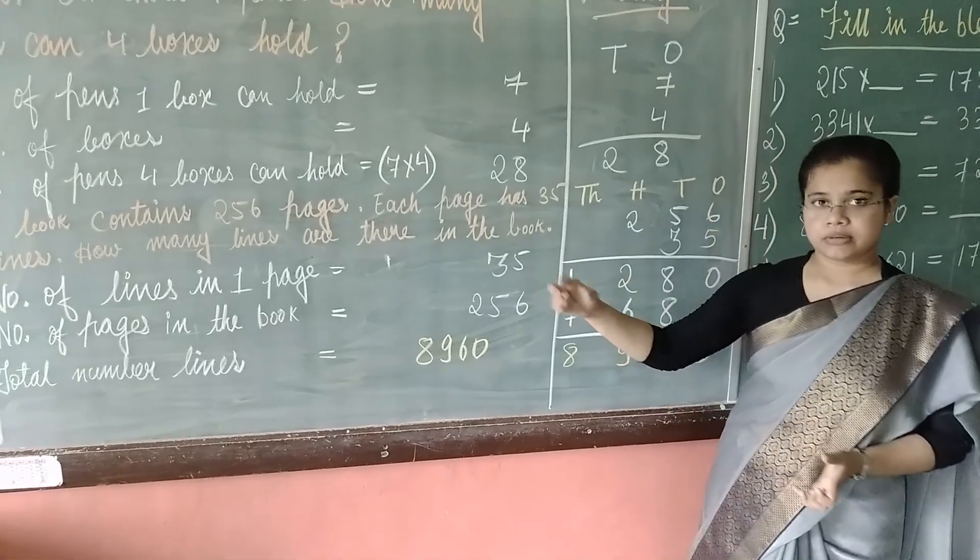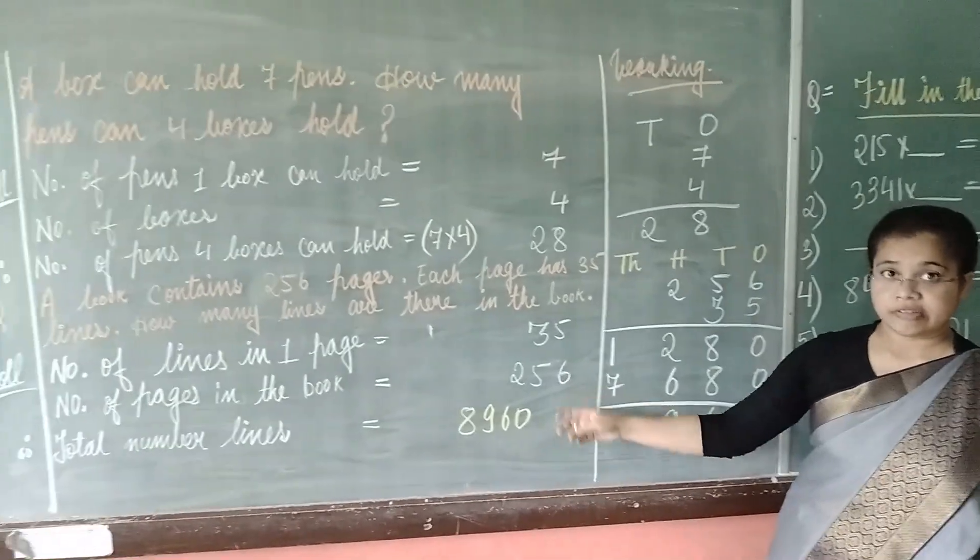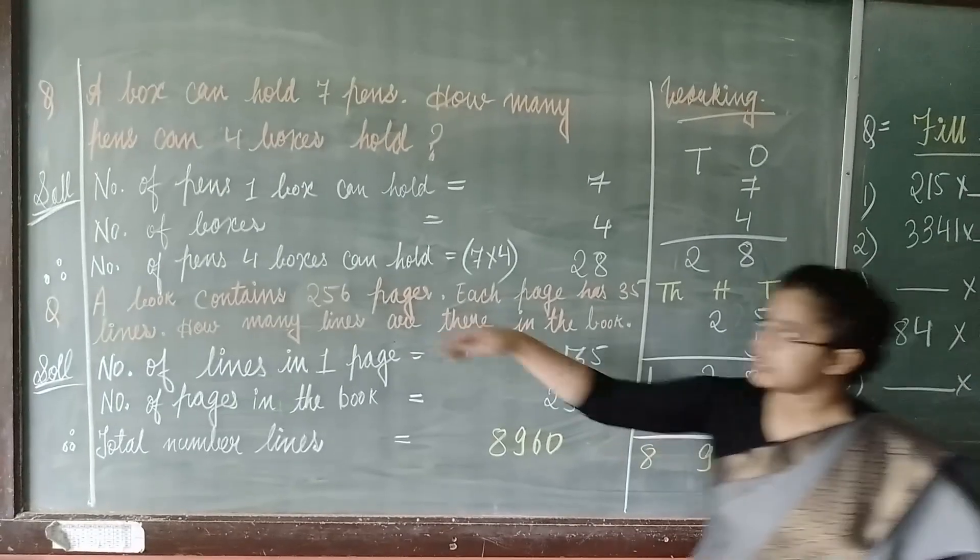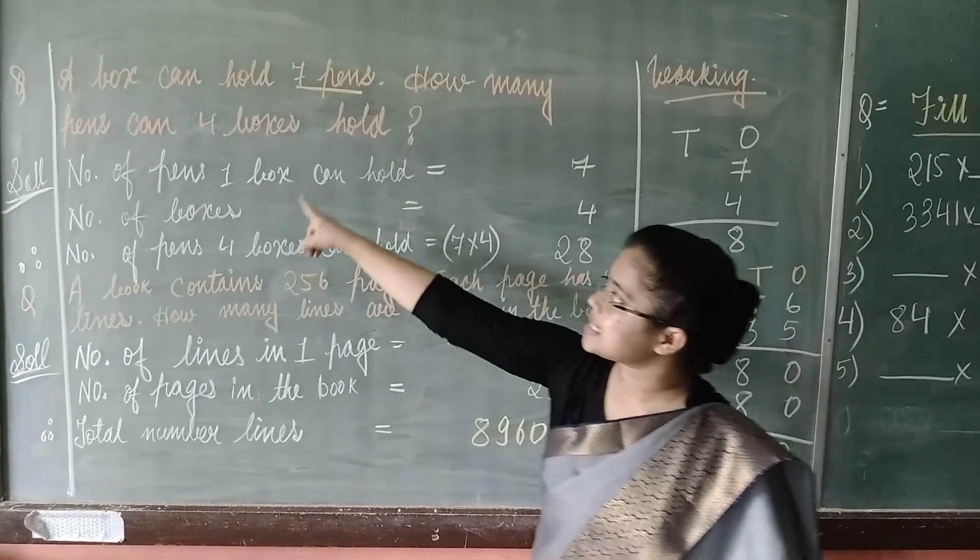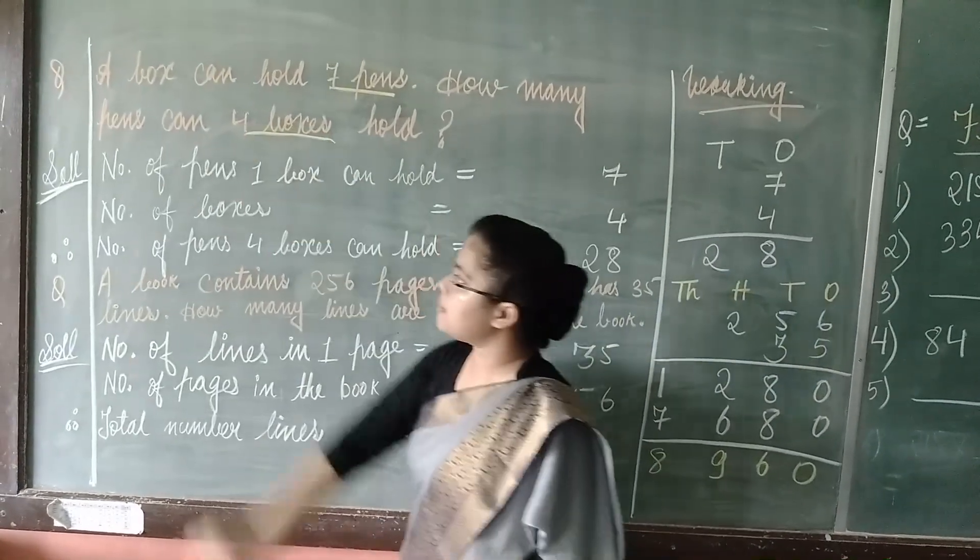So, now I will explain you about the statement sums in this video. So, the question is, a box can hold 7 pens. How many pens are there in 4 boxes?